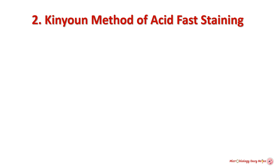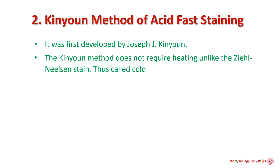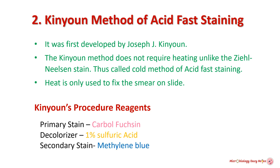The next acid fast staining method is the Kinyoun method. The Kinyoun method was first developed by Joseph Kinyoun. It does not require heating, unlike the Ziehl-Neelsen stain, and is thus called the cold method of acid fast staining — heat is only used to fix the smear on the slide. Kinyoun method reagents: primary stain is carbol fuchsin, decolorizer is 1% sulfuric acid, and secondary stain is methylene blue.